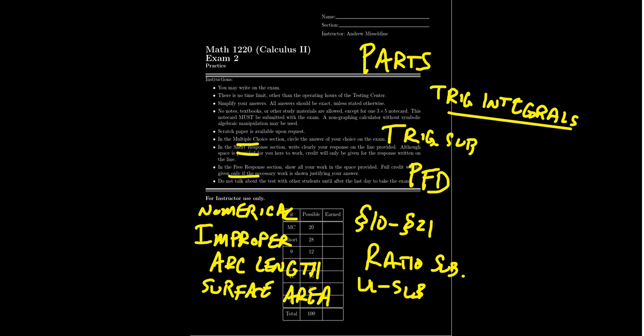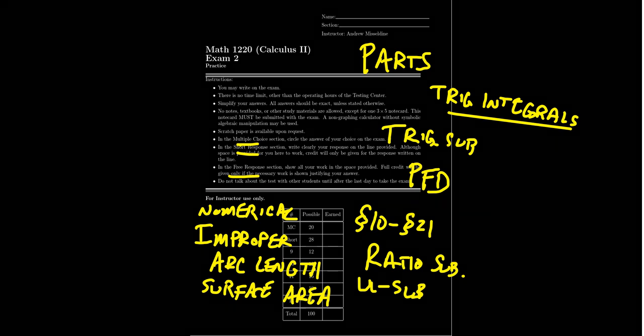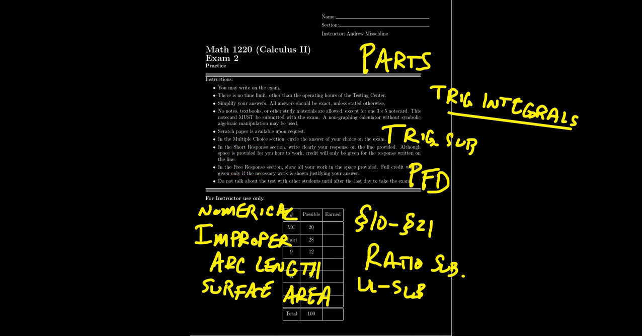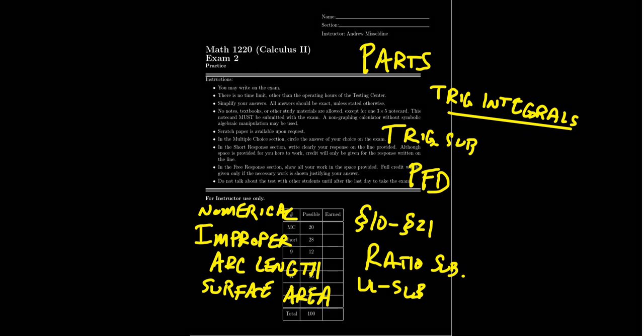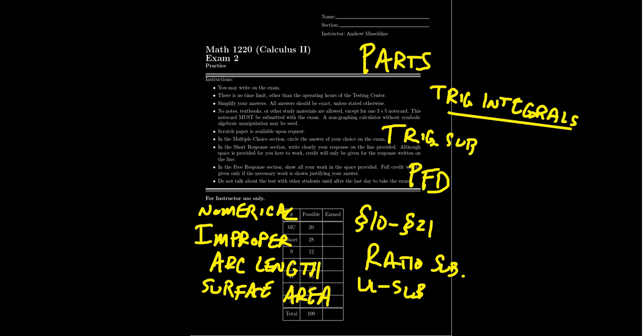The structure and policy related to these types of questions are identical to the previous exam. There'll be four multiple choice questions worth five points each. There'll be four short response questions worth seven points each. And then there will be four free response questions, most of which are worth 12 points, but there is a 16-point question coming up. Let's take a look at these topics.